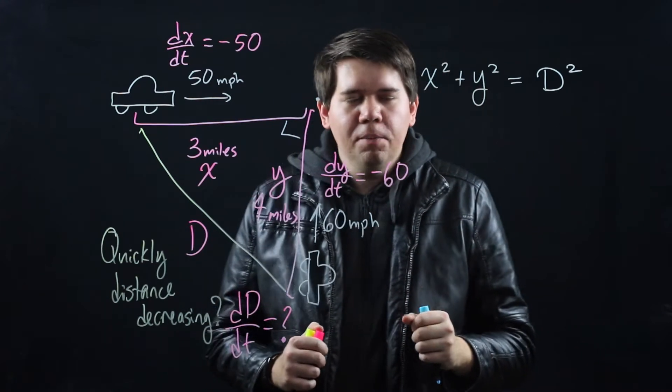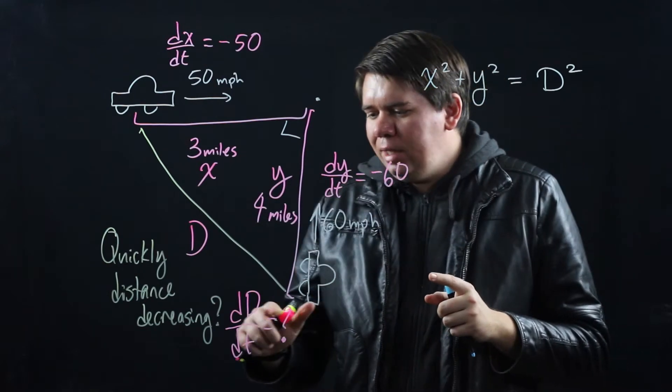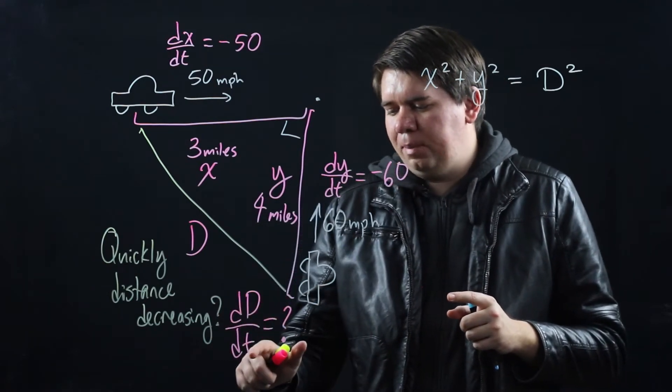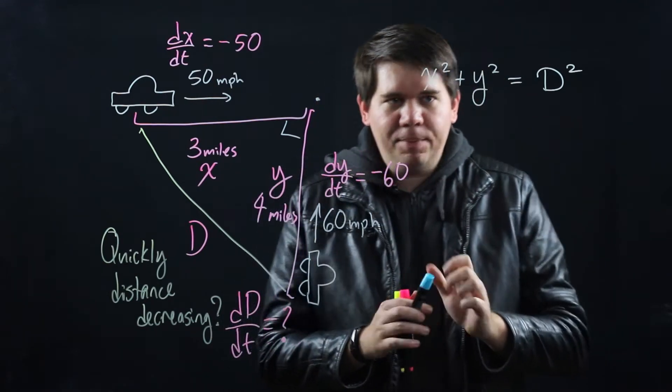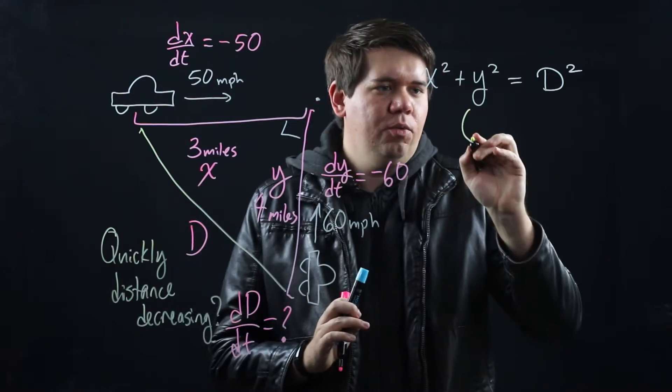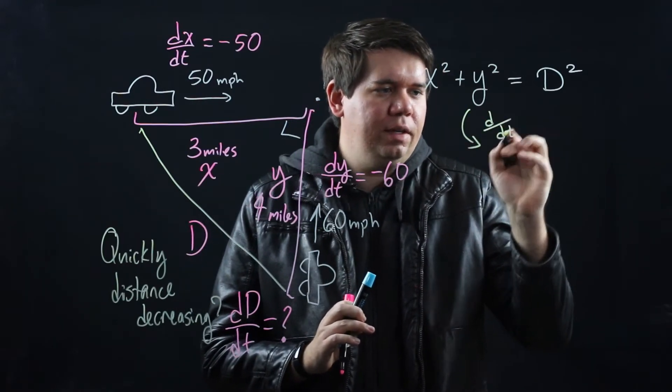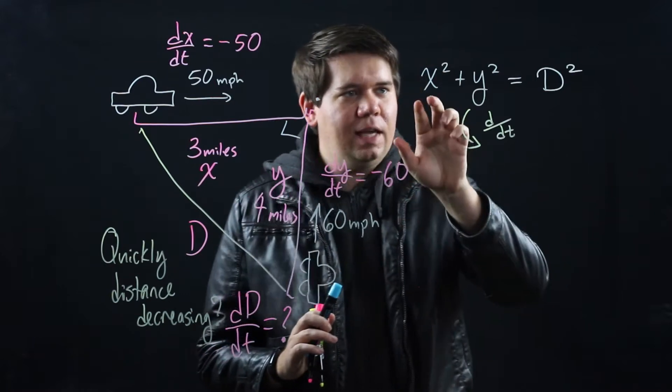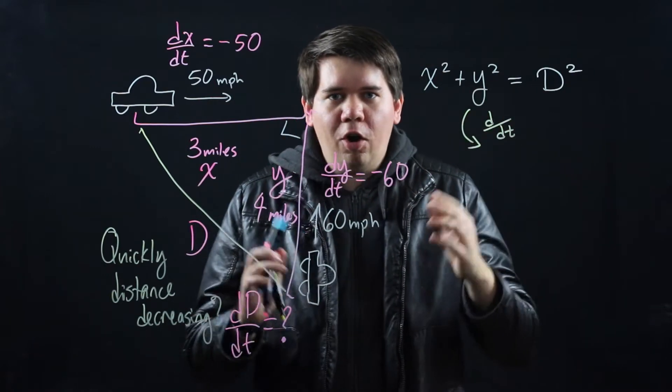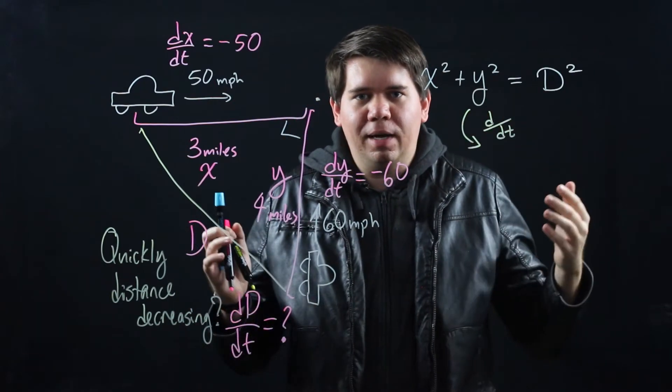Great. We're almost there, but now we want to remember that since we really care about the change of d with respect to time, the next step is to take the derivative of this. We're going to do implicit differentiation taking the derivative with respect to time. This x, y and d are all secretly functions with respect to time.